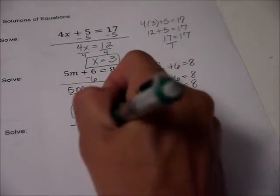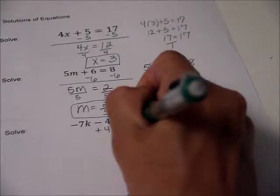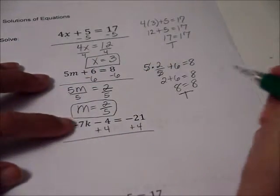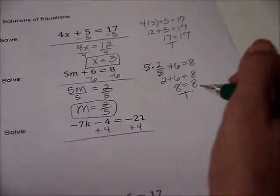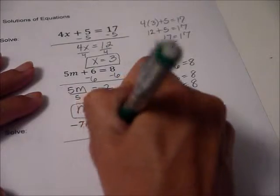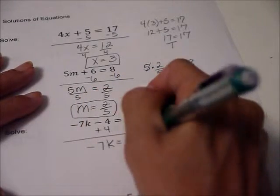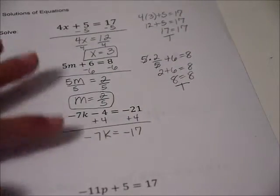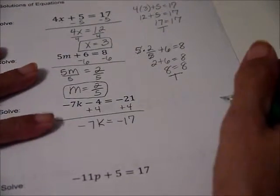All right. Let's do this one. I can see why this one is more exciting. Again, deal with the 4 first. The 7 is more closely attached to the k, so we deal with that last. Okay. So we get negative 7k equals negative 17. All right.